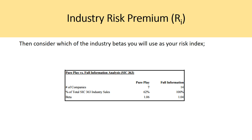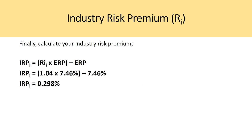The average beta for pure play players in this example is 1.06, while for full information players it is 1.04. I always recommend using the full information approach for complete transparency. Using an equity risk premium of 7.46% with a risk index of 1.04 gives an industry risk premium of approximately 0.298%.